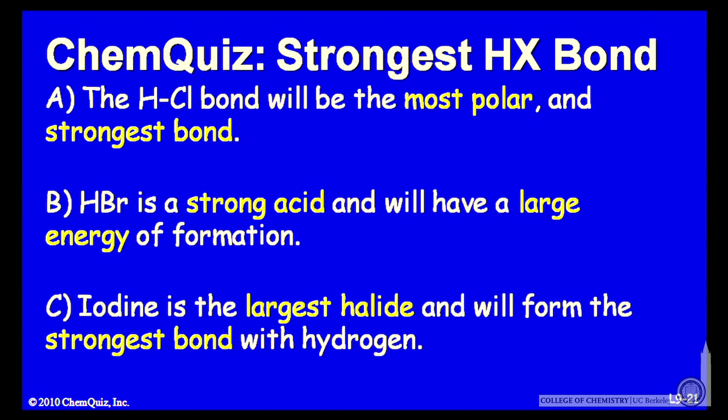Let's look at an argument for each of the possible answers. For A, the HCl bond will be the most polar and therefore the strongest bond, releasing the most energy. B, HBr is a strong acid and will have a large energy of formation. Or C, iodine is the largest halide and will form the strongest bond with hydrogen. Think about those three possible arguments and make another selection.